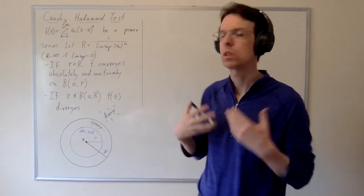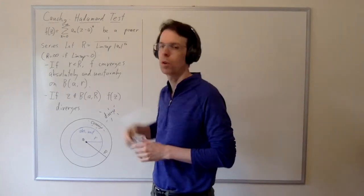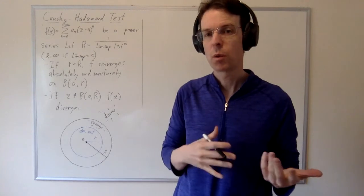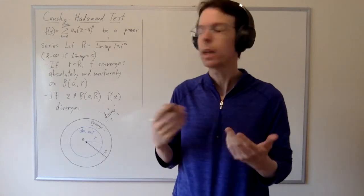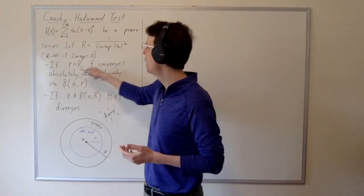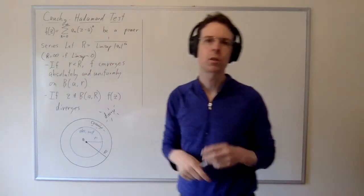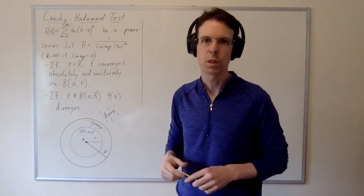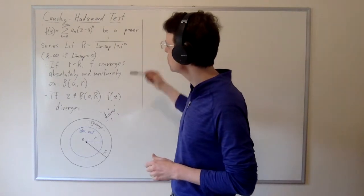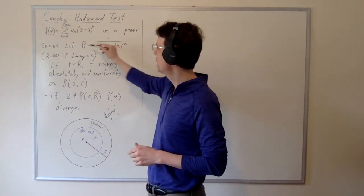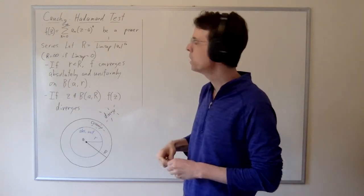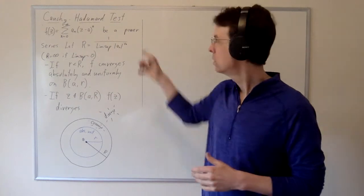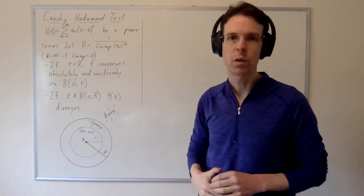That's going to give us some answer. Then we're going to take the reciprocal of that. We have to worry about whether we can take the reciprocal. If the limsup gives you 0, then we should regard R to be infinity. And if this limsup gives you infinity, then we should regard R to be 0. So we take the reciprocal and that gives us this value cap R.